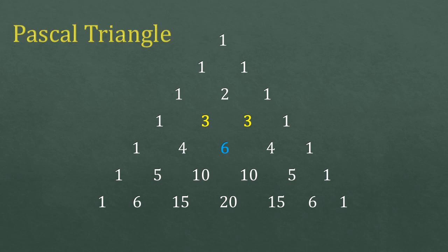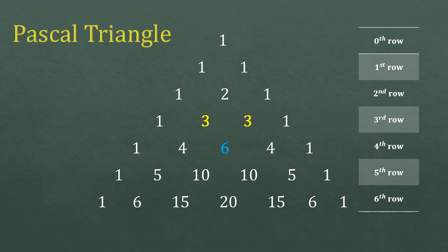Now for what we are going to do with this Pascal Triangle, you have to keep one thing in mind. The counting sequence starts with zero here. I'll repeat it. The counting sequence starts with zero here. Like the one at the very top is the zero row, not the first row. The row just below it, that is the first row. Then comes the second row, third row, fourth row, fifth row, and sixth row.